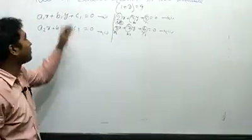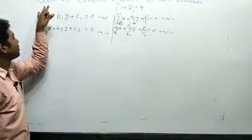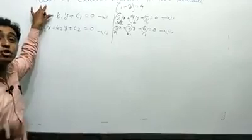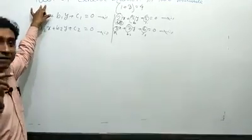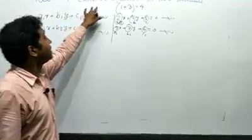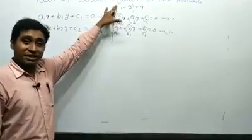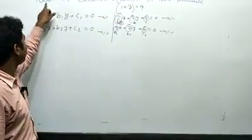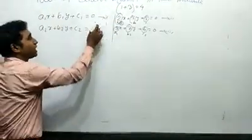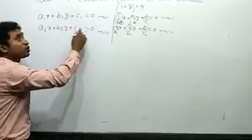So a pair of linear equations means two linear equations together. These two equations form a system — we need to determine what kind of solution they have.